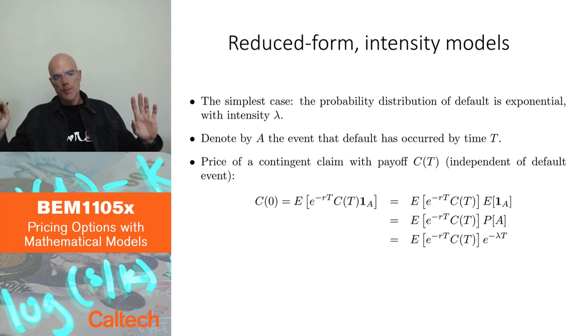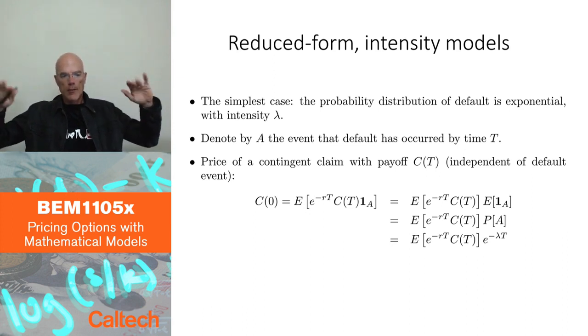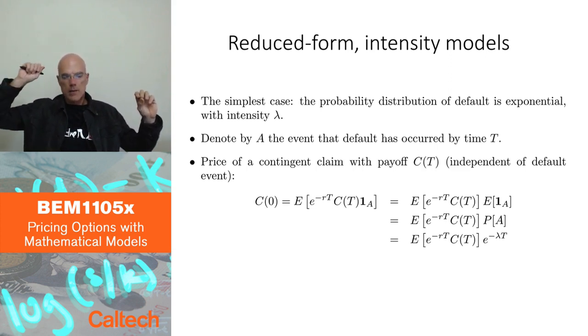You simply assume, independently of everything else, you model the default. There is no value of the firm, there are no stocks. You're just modeling the time of default. And time of default is a random variable. Let's model it as an exponentially distributed random variable.